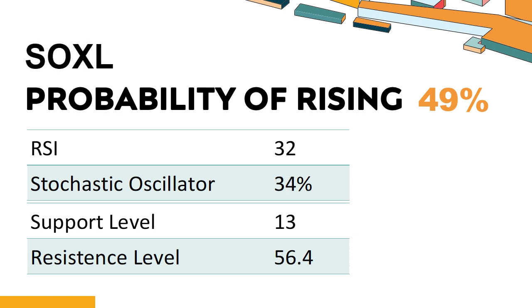Is SOXL showing signs of bullish momentum based on technical data? SOXL's 14-Day Relative Strength Index (RSI) value was 32. When the RSI is above 25 and below 50, it generally indicates that the stock is moderately bearish, meaning the price has been falling but has not yet reached oversold levels. The current stochastic oscillator of SOXL is 34%, indicating a strong downtrend and strong selling pressure.